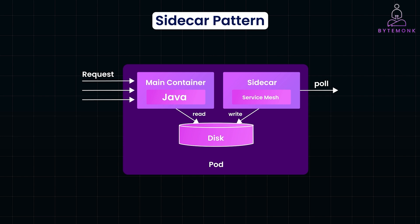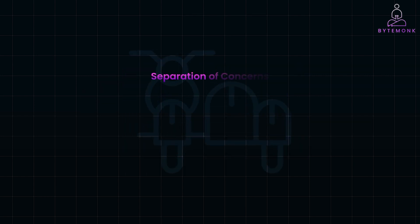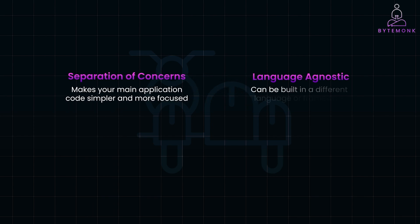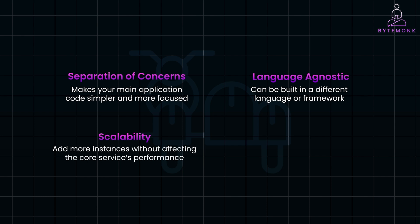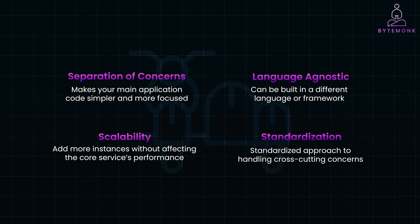The sidecar runs in the same pod or machine as the main service, but they communicate over a local network. The sidecar's independence allows you to manage it separately — update, deploy, and scale it without affecting the main service. The sidecar cleanly separates non-business logic from your core service, making your application code simpler and more focused. The sidecar can be built in a different language or framework and scaled separately based on demand. For example, you might need more instances of the sidecar for tasks like monitoring under heavy load without affecting the core service's performance. By using sidecars across multiple services, you create a standardized approach to handle cross-cutting concerns like security, observability, and communication.